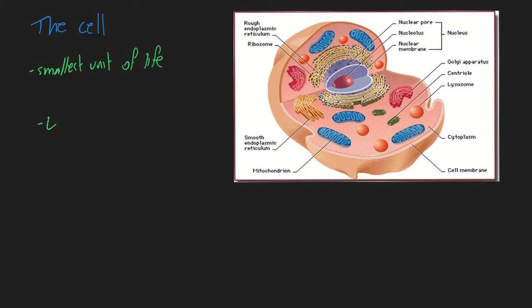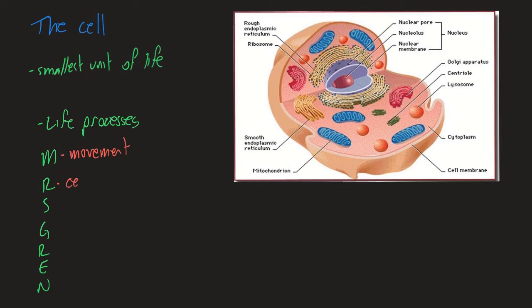Those life processes we can summarise as MRS GREN. The M is for movement — cells are capable of movement. R is for respiration, or specifically cellular respiration — the process of converting glucose to energy. S is for sensitivity: detecting stimuli and responding to stimuli.